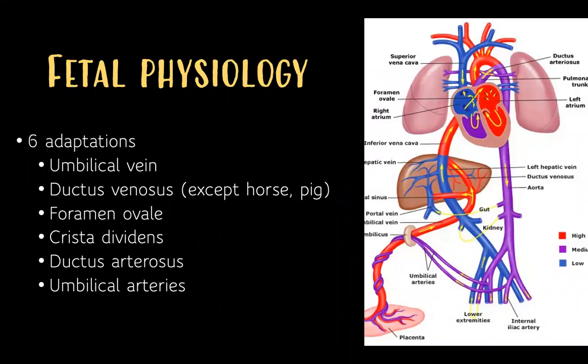In terms of fetal physiology, there are a lot of adaptations a fetus uses to live in a hypoxic environment like the womb. These include the umbilical vein, the ductus venosus — which connects the umbilical vein to the inferior vena cava, bypassing the hepatic vein — the foramen ovale, the crista dividens within the heart, the ductus arteriosus between the pulmonary artery and the aorta, and the umbilical arteries returning blood to the placenta.